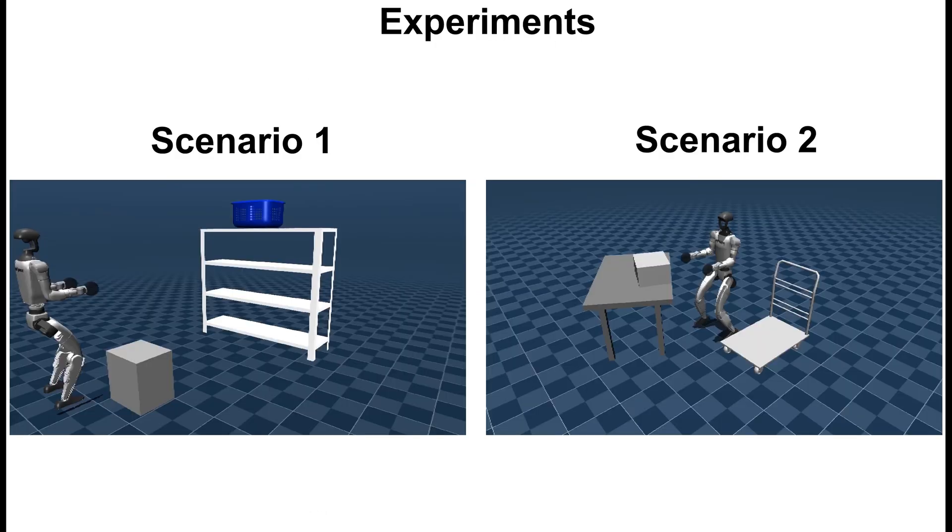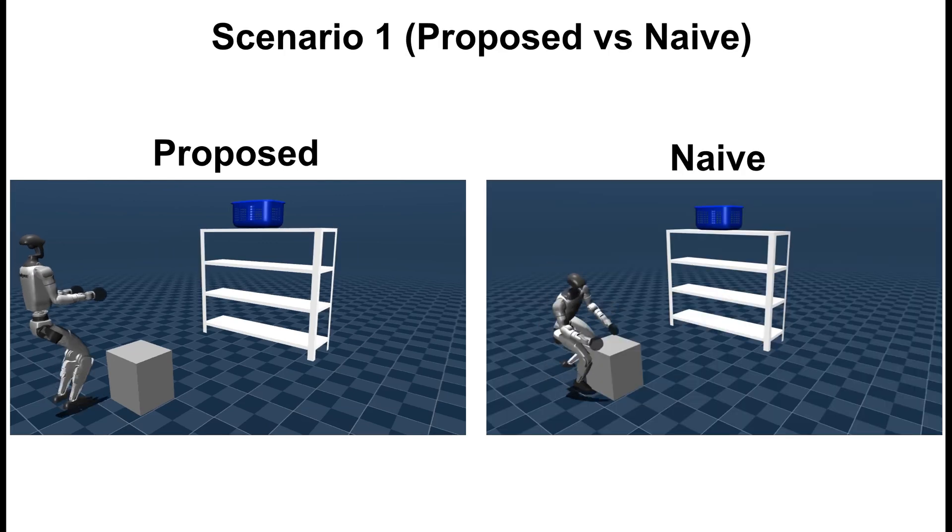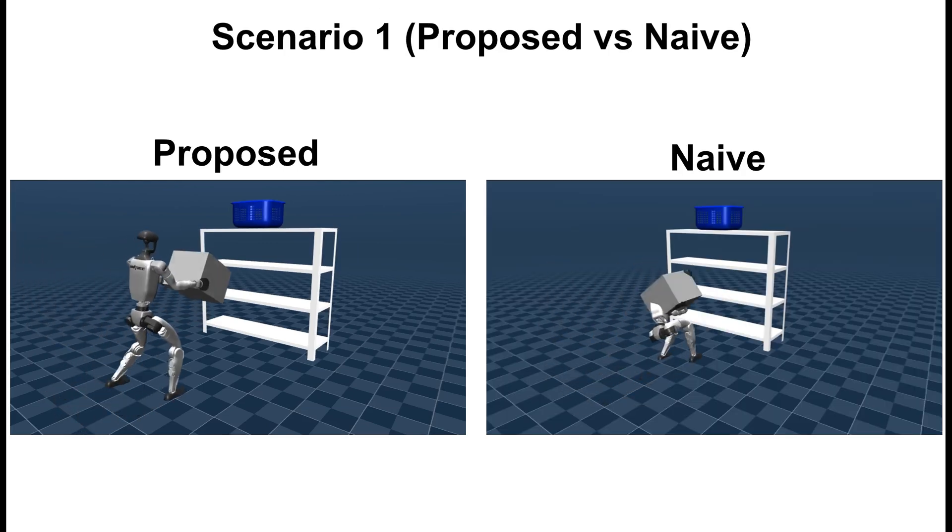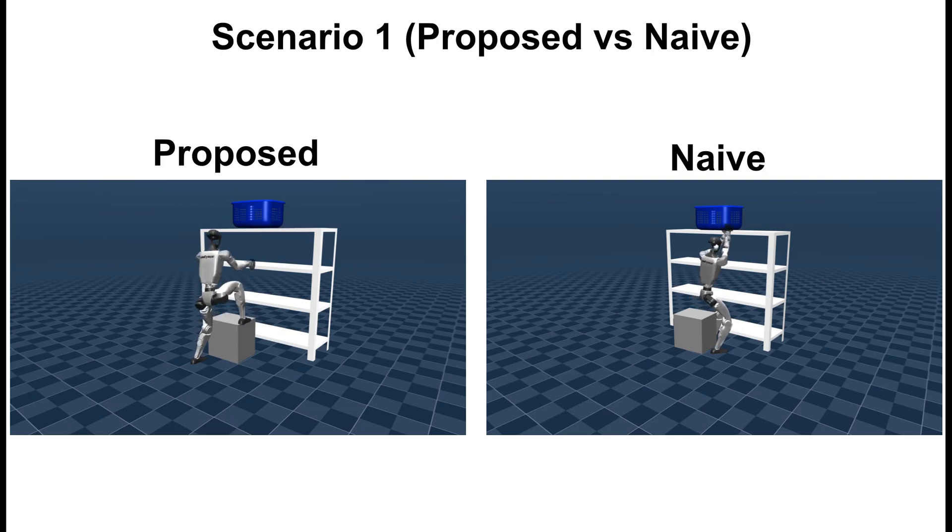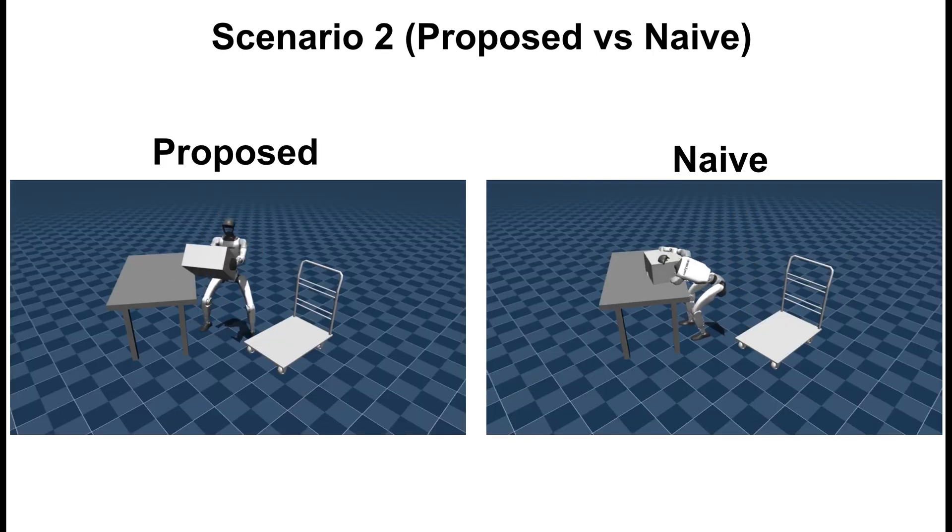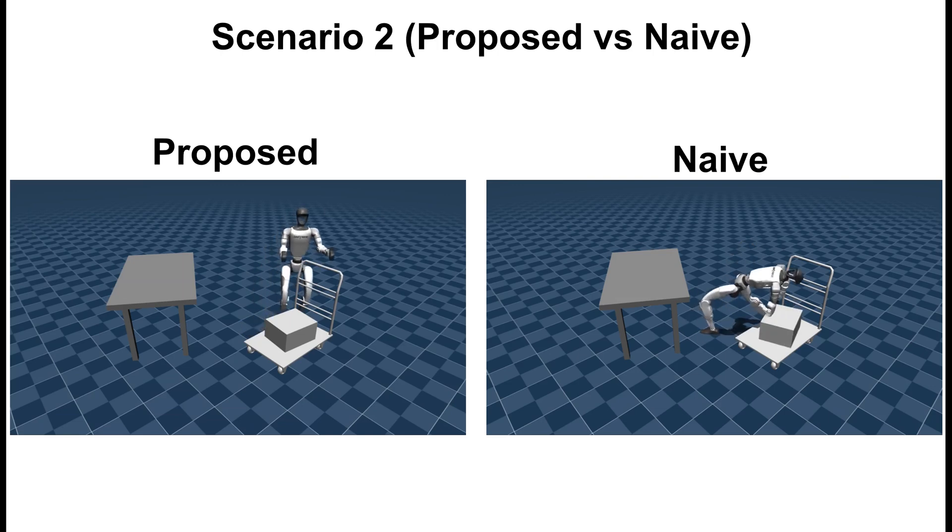We validate our pipeline on two scenarios and show that with a set of minimal collision penalties our method is able to generate physically plausible and collision-free trajectories compared to a naive approach that only uses the contacts from a semantic-aware foundation model.